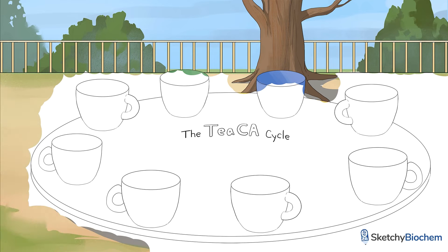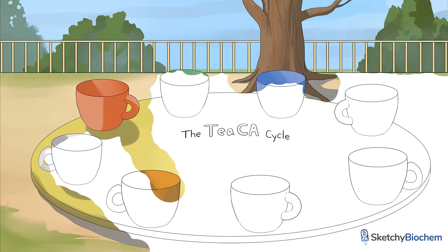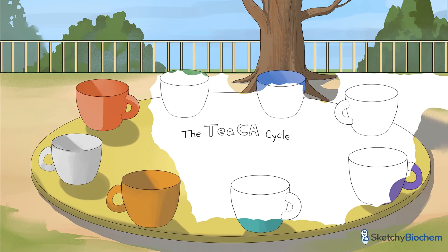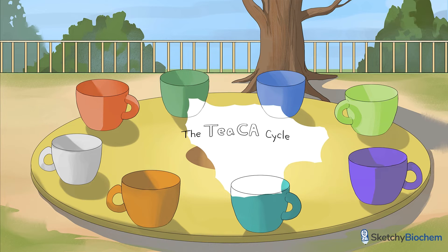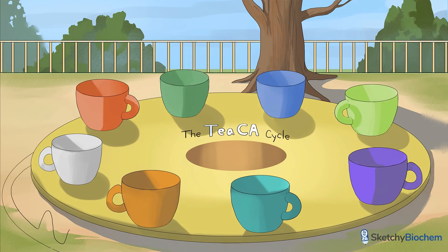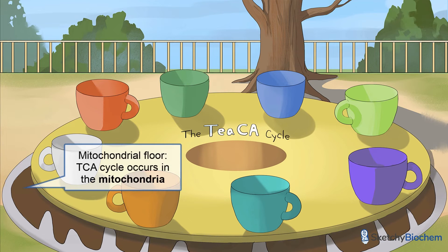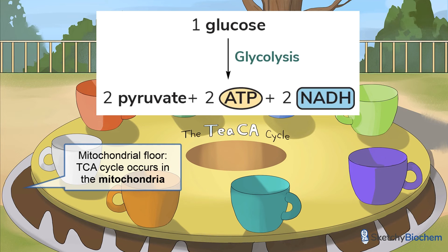The TCA, or Krebs Cycle, is a series of chemical reactions that are necessary for aerobic metabolism and ATP synthesis. To recap, one glucose produces 2-pyruvate, 2-NADH, and 2-ATP during glycolysis.